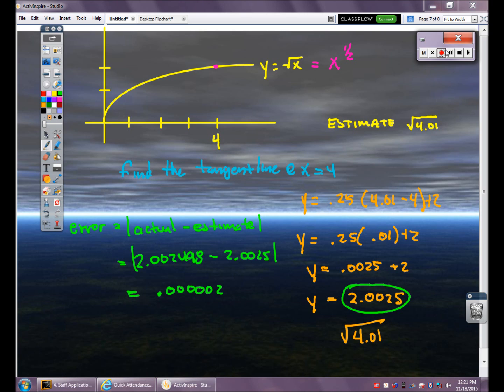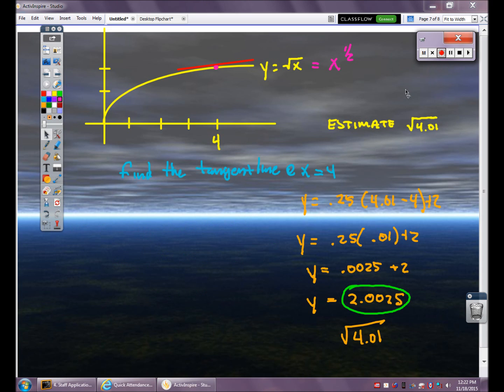My question now, is this an overestimate or an underestimate? This is going to be an overestimate. And the reason why is if I look at my tangent line in red, my tangent line is above the curve in yellow. The function for y equals root x is concave down at 4. So it's curving below the tangent line.